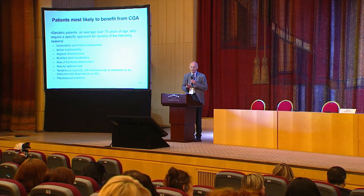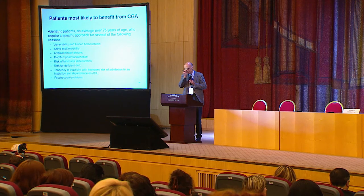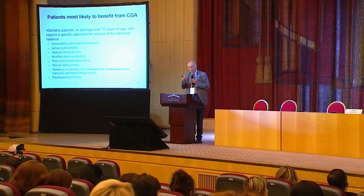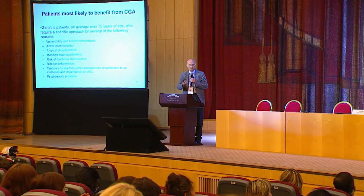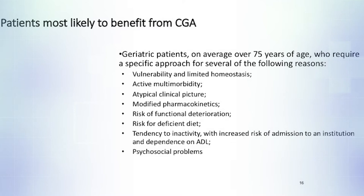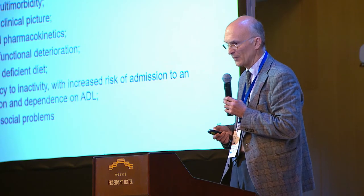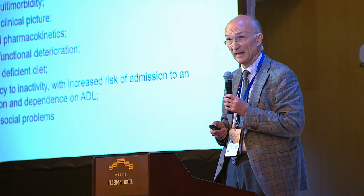Who is going to benefit most from CGA? Not each and every older person, but the people who are vulnerable, with limited homeostasis, with active multimorbidity, active presence of several diseases. Also people who might have atypical clinical presentation of the disease, modified pharmacokinetics due to age or multimorbidity, risk of functional deterioration, risk of deficient diet, tendency to inactivity, and also psychosocial problems and isolation.